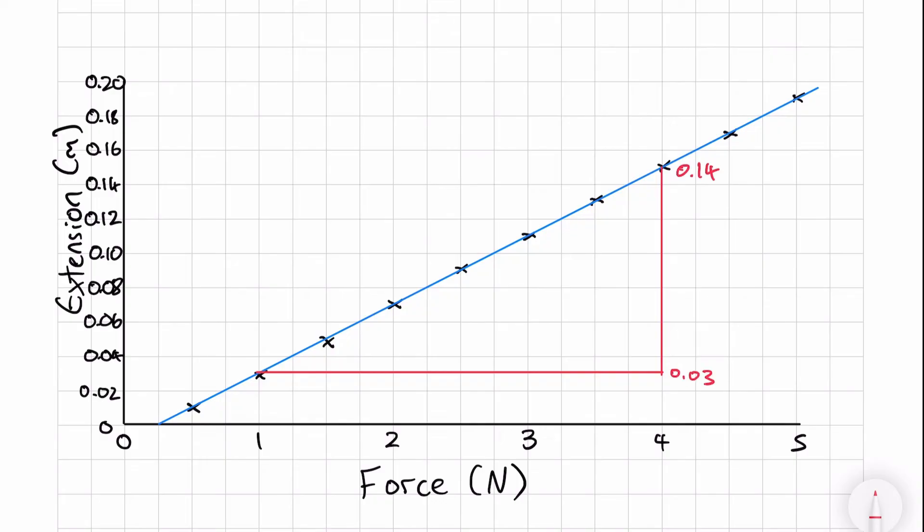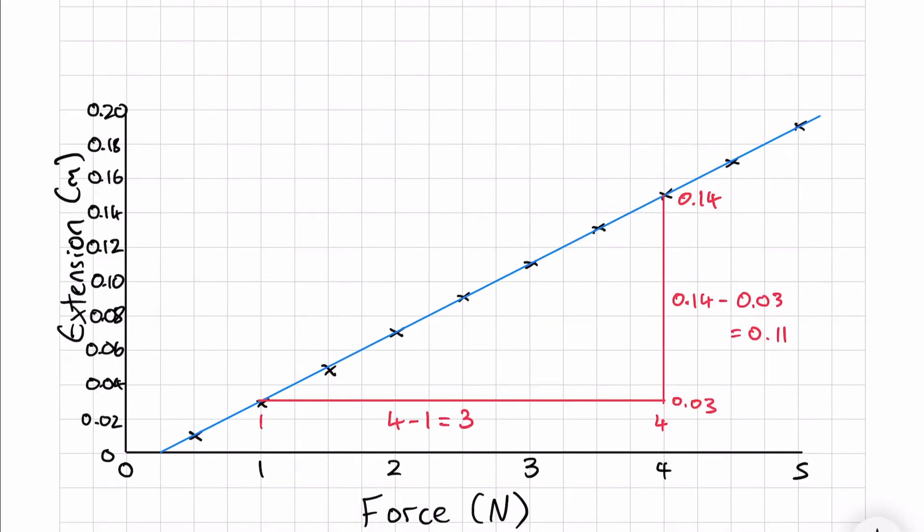To find the spring constant k, we need the gradient of our line of best fit. Using the triangle method, we can calculate the gradient as rise over run. Make sure this is larger than half of the graph to get full marks.